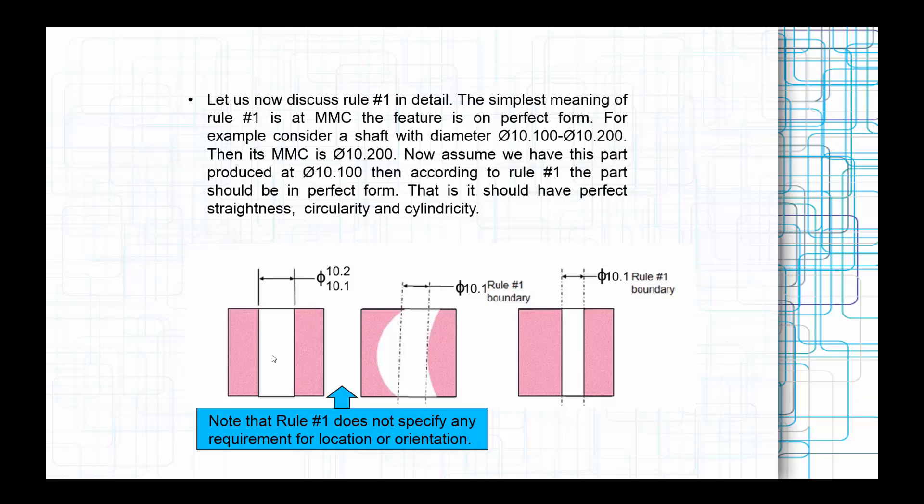We are not mentioning all these things with respect to Rule Number 1. We are saying that perfect form. That perfect form signifies directly the straightness, circularity, and cylindricity. Whenever you see this type of notes in your GD&T manufacturing drawings, that is all about your Rule Number 1.